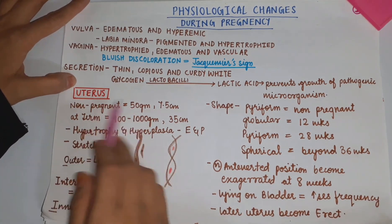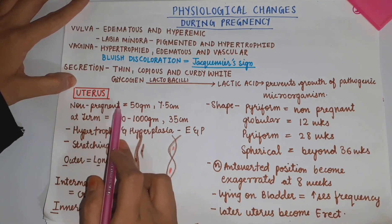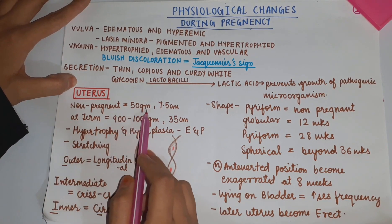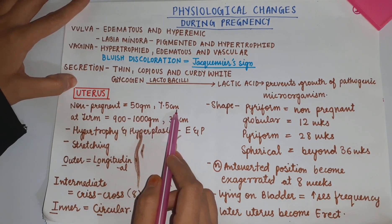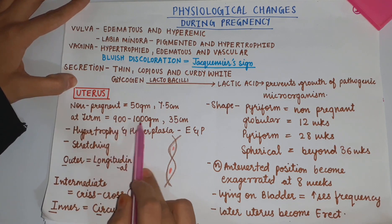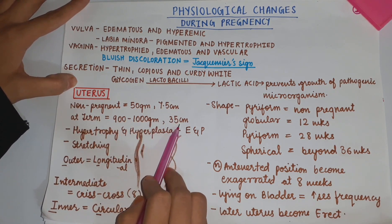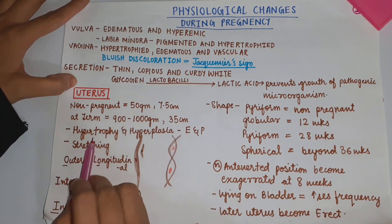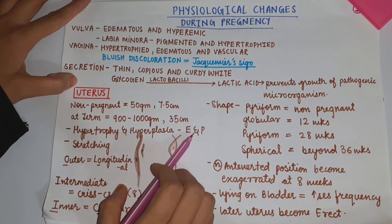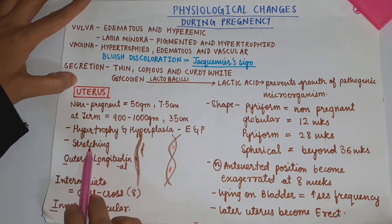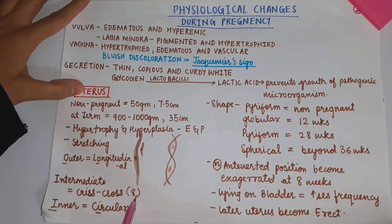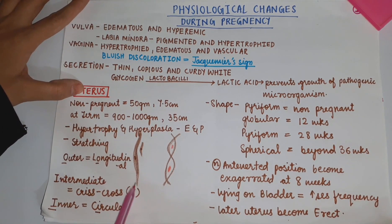We will see physiological changes that take place in the uterus. The non-pregnant uterus is 50 grams and 7.5 cm in length. At term, it becomes 900 to 1000 grams and 35 cm in length. There occurs hypertrophy and hyperplasia under the influence of estrogen and progesterone, and there occurs stretching of muscle.